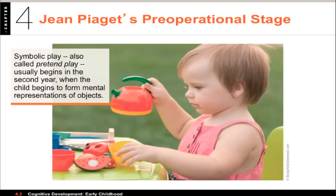Egocentrism in this context does not mean vain or self-centered, but rather the inability to literally take the viewpoint of another person. To study this, Piaget developed the three mountains test. A child would sit at one end of a table with three model mountains on it. In this arrangement, one mountain would be to the left of the others. Piaget would then ask the child whether a doll sitting on the other side of the table would also see that same mountain on the right side — which it wouldn't.